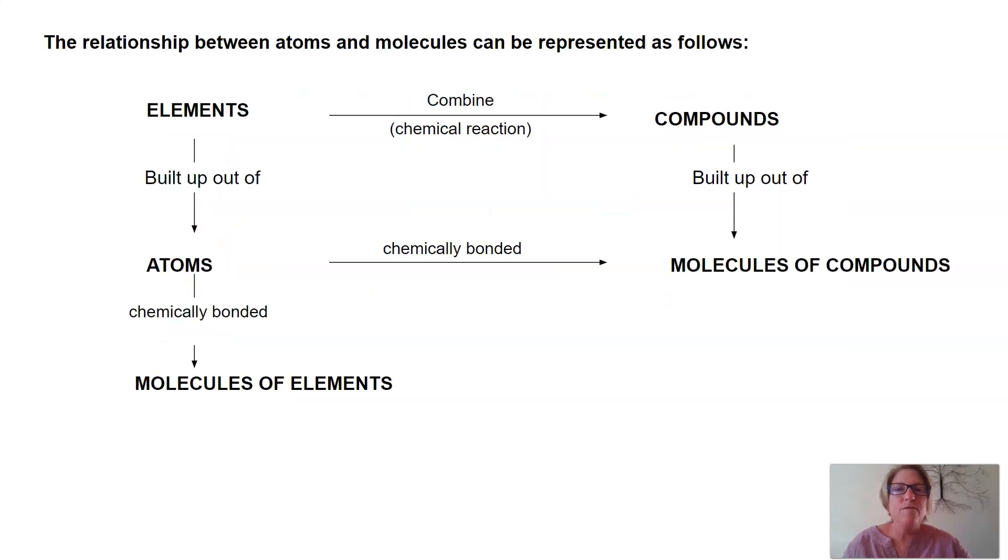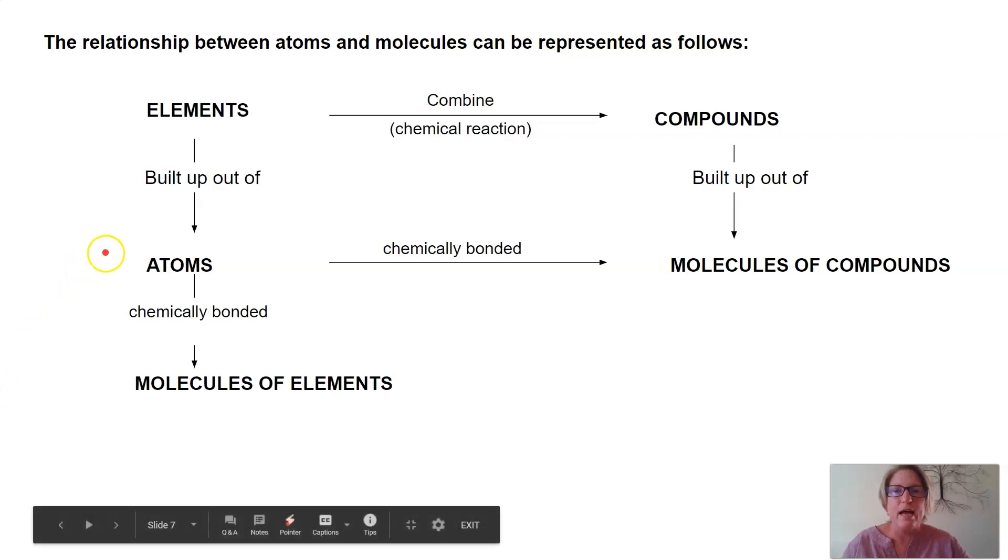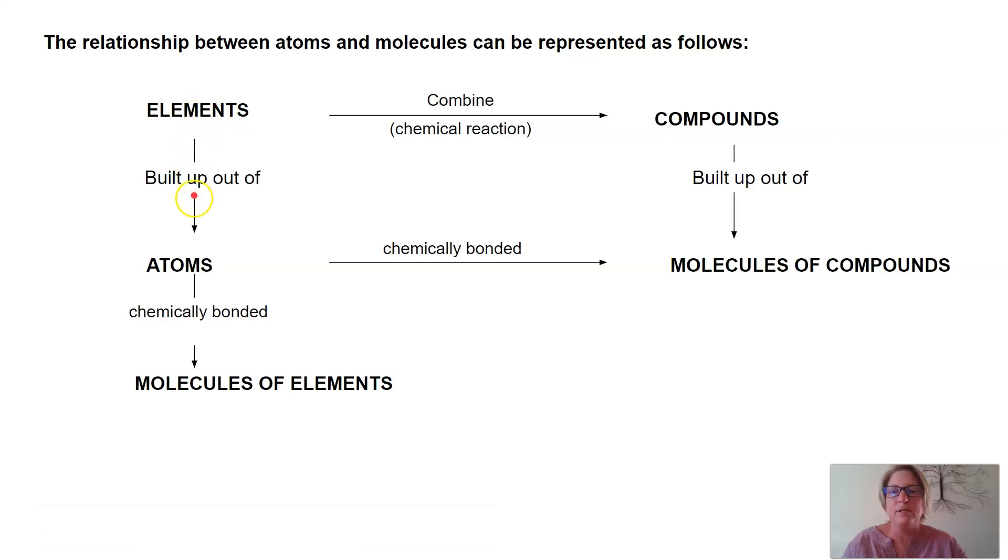This is also a wonderful diagram to show the relationship between atoms and molecules. So if we have a look at elements, elements are built up of atoms, and the atoms are chemically bonded together. And remember that a molecule is two or more atoms that are chemically bonded, so we can have molecules of elements. The other thing that can happen is different elements can combine chemically to form compounds. We can have atoms that can chemically combine, and together with compounds, they can be built up out of a whole lot of atoms, and we can get molecules of compounds.